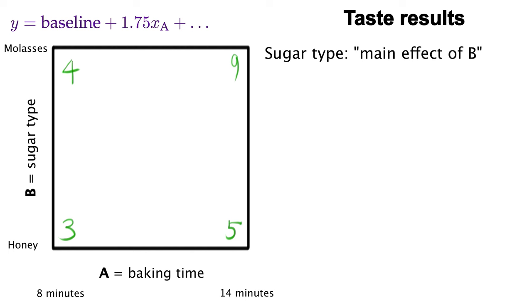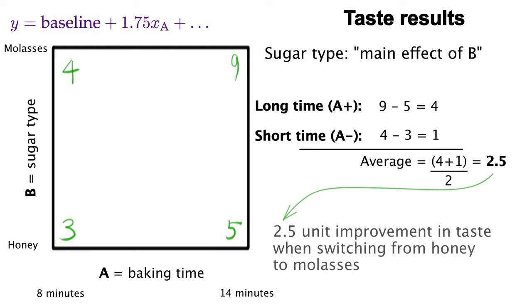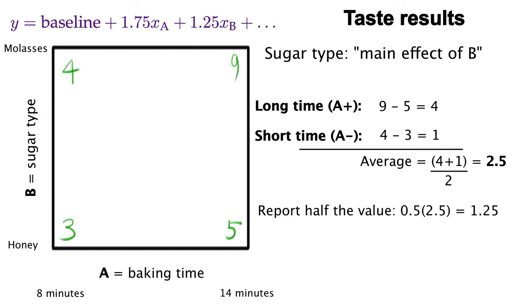Next, we examine the main effect of sugar. When we move from high to low, we can see this is 9-5, that's 4. And the change at low baking times is 4-3, which equals 1. So the average of 4 and 1 is 2.5. There's a 2.5 unit change, on average, in taste, when we go from using honey to molasses. We report half the value again.